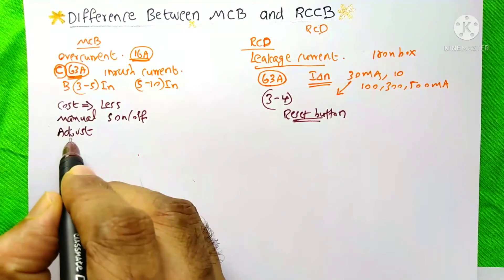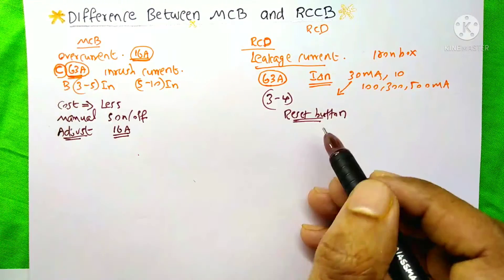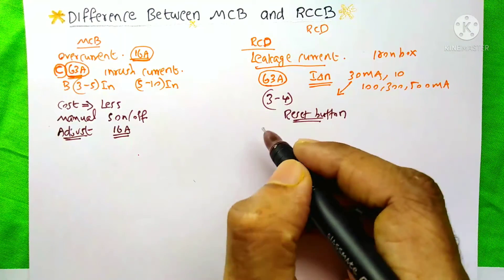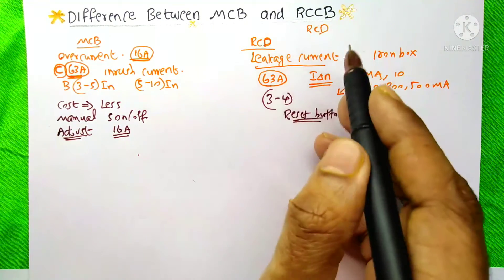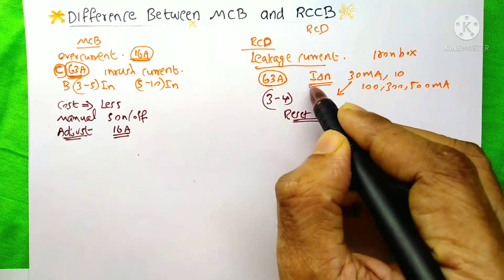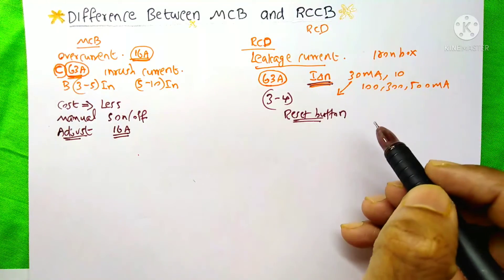And about this MCB, we can't adjust the current of MCB. The same as here also, RCD. We can't adjust the ampere rating as well as this I delta N rating of the RCD.